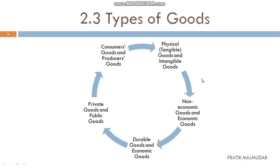Second is non-economic goods and economic goods. The goods which are used for the purpose of exchange will be termed as economic goods, and others will be known as non-economic goods. Next is durable goods and perishable goods.